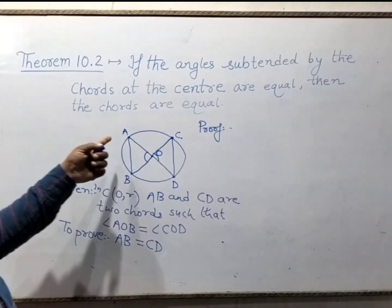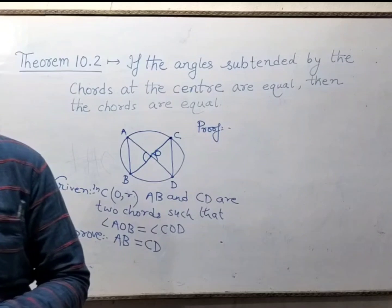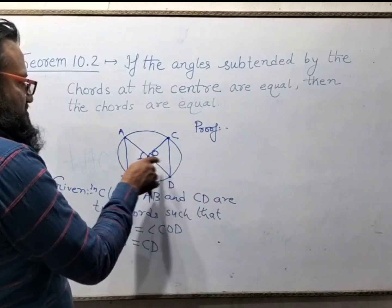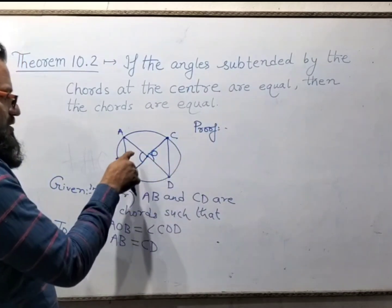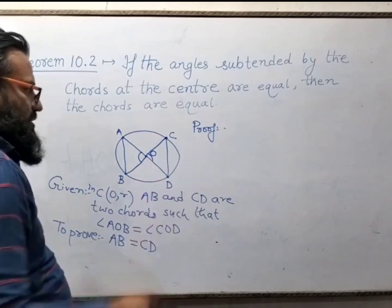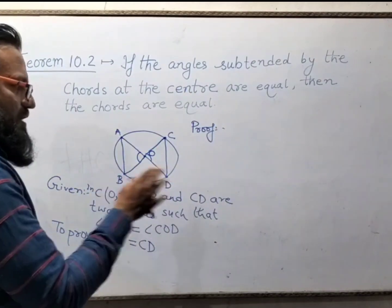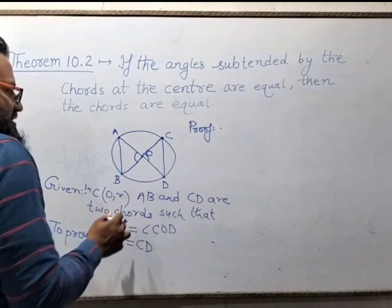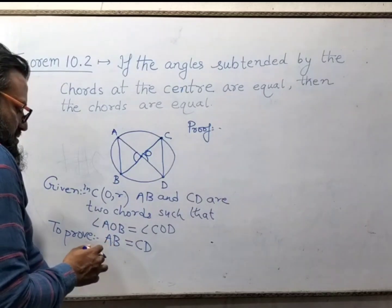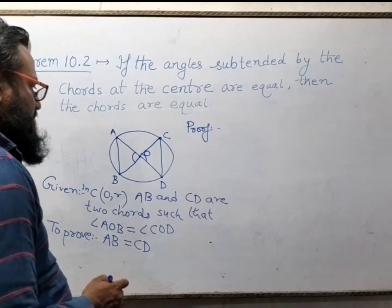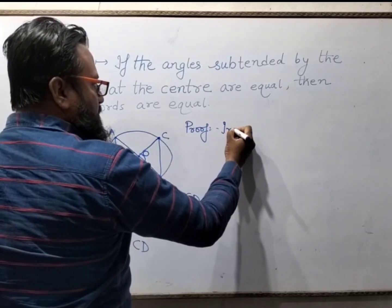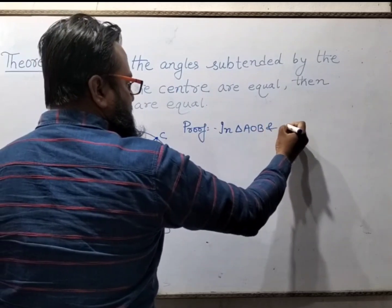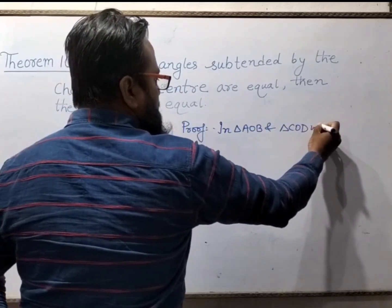To prove that these chords are equal, we shall look at two triangles: triangle AOB and triangle COD. We shall make them congruent. If we make both of these triangles congruent, then we can easily prove that AB is equal to CD. So in triangle AOB and triangle COD, we have the following.